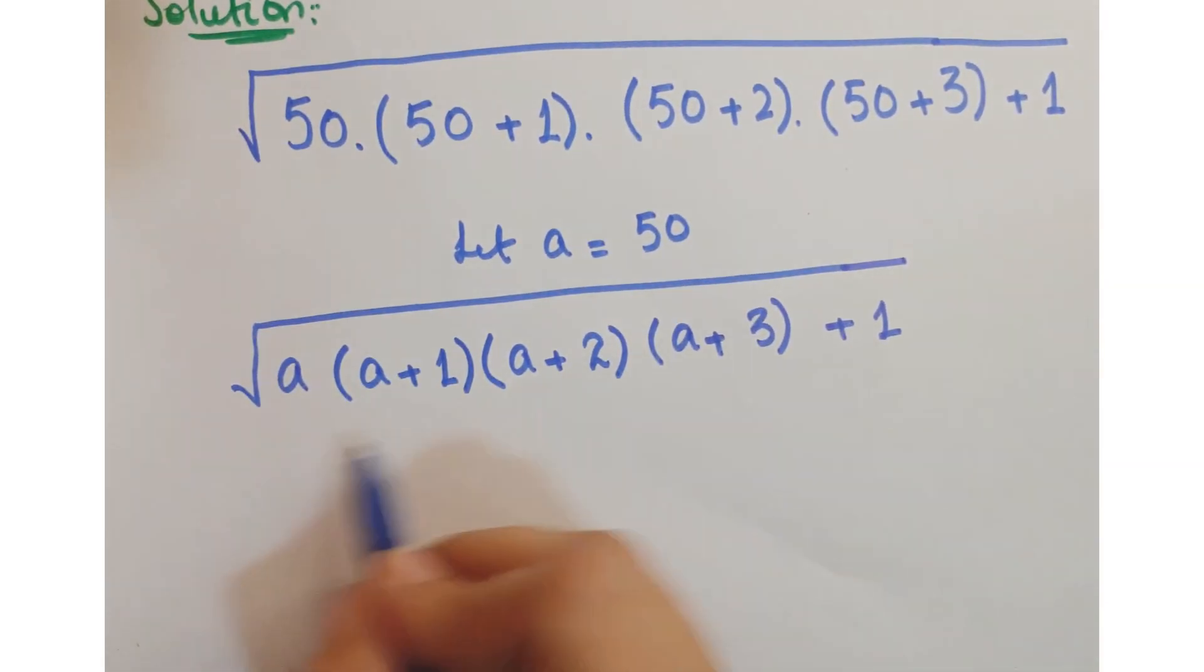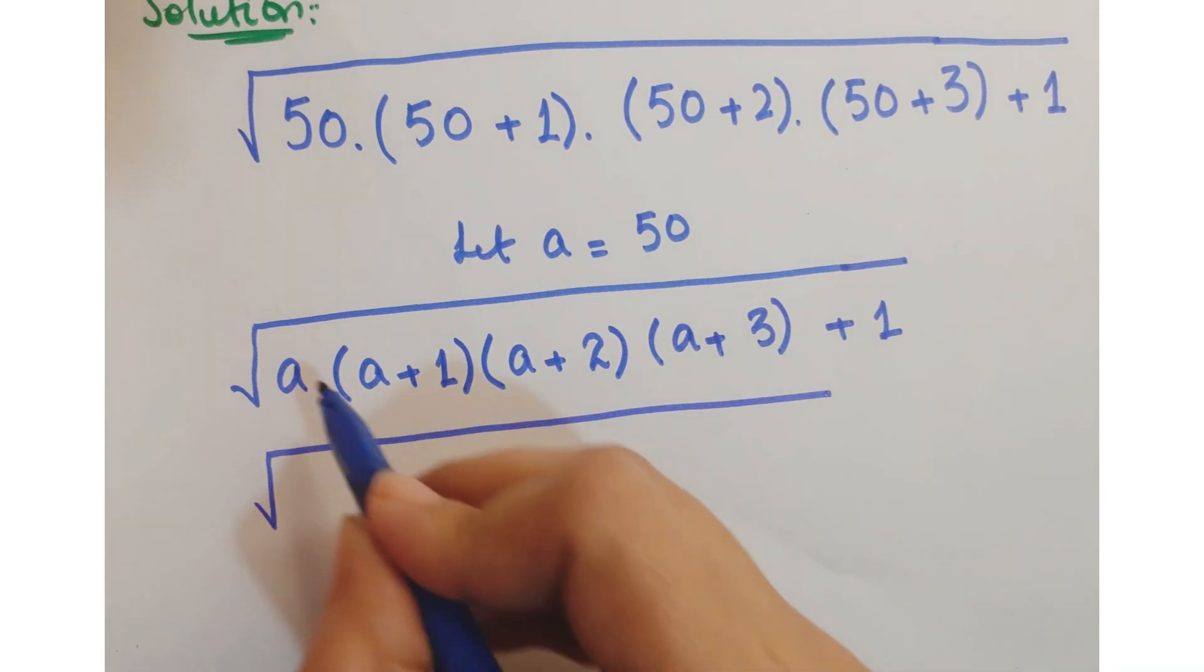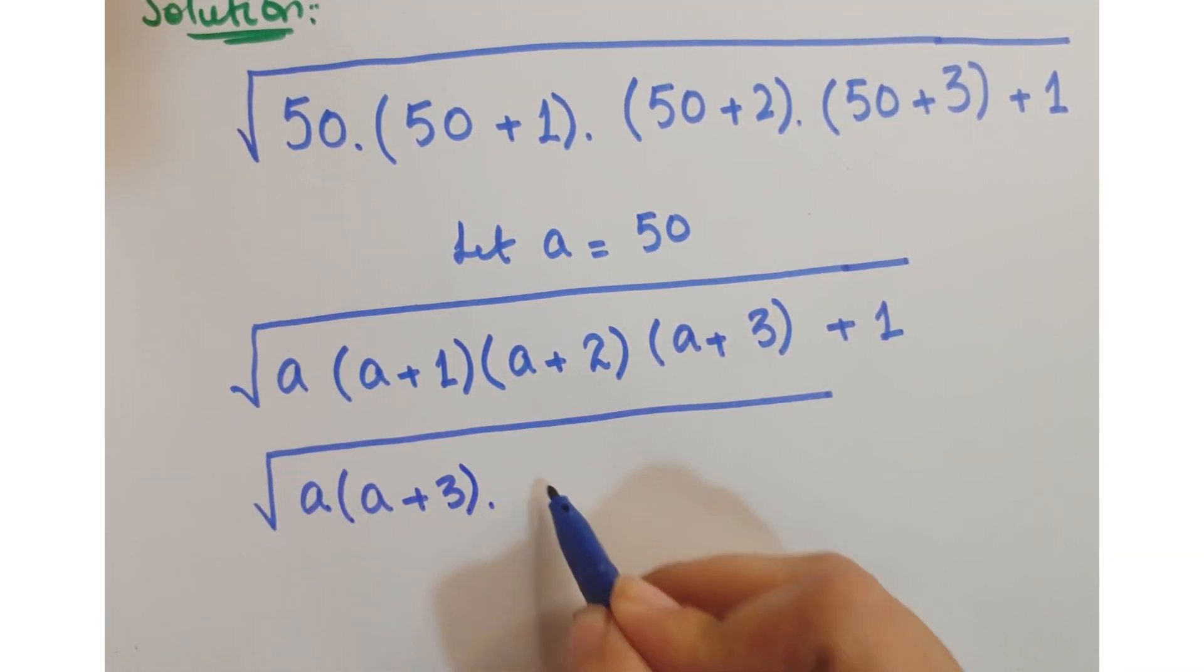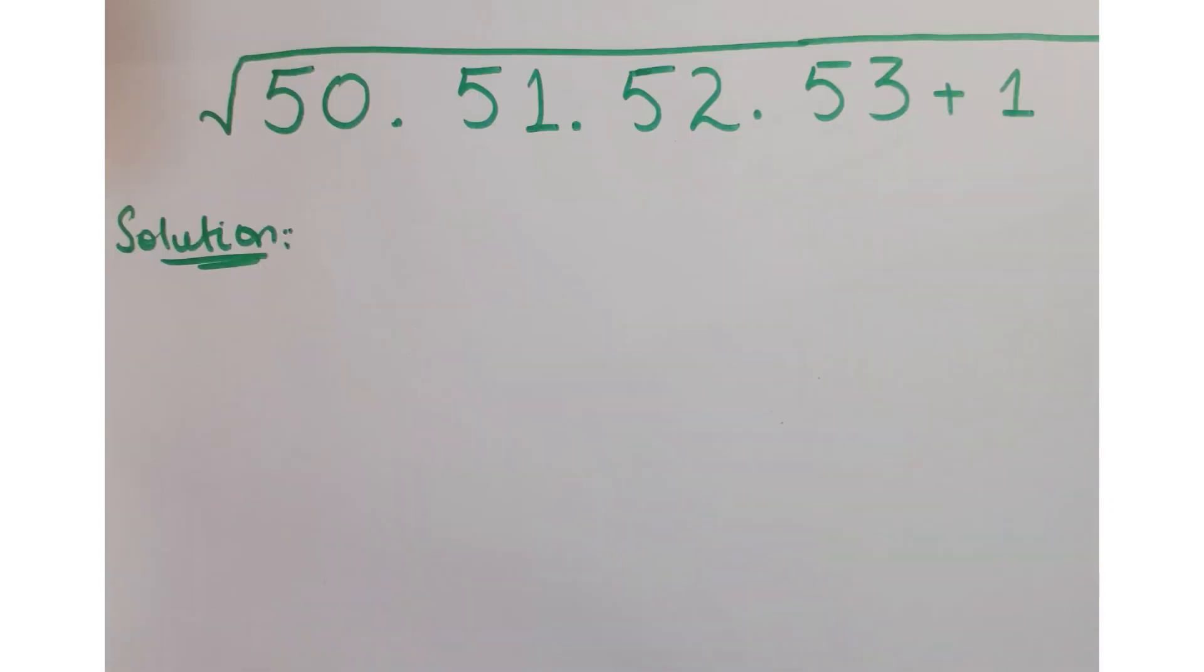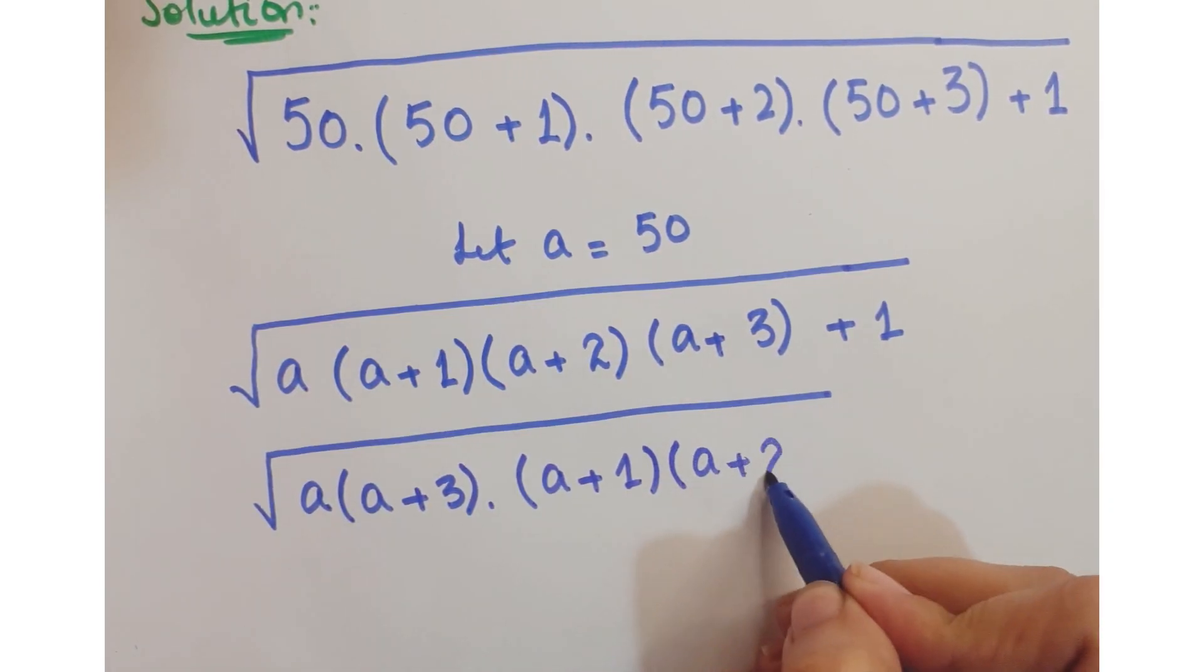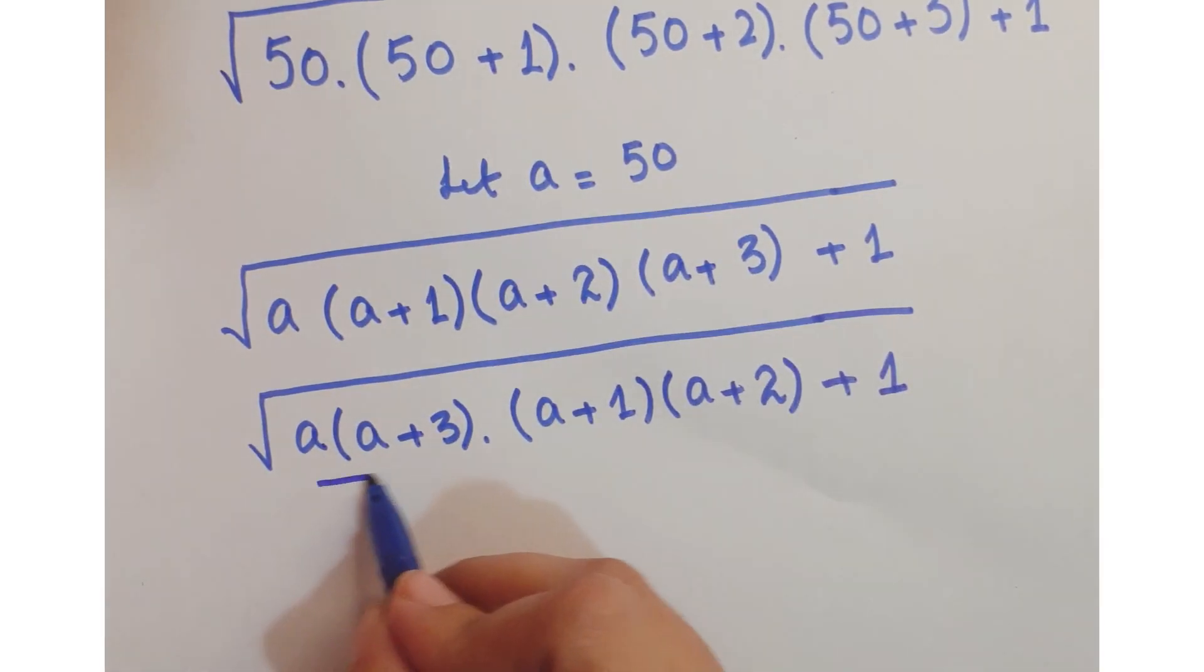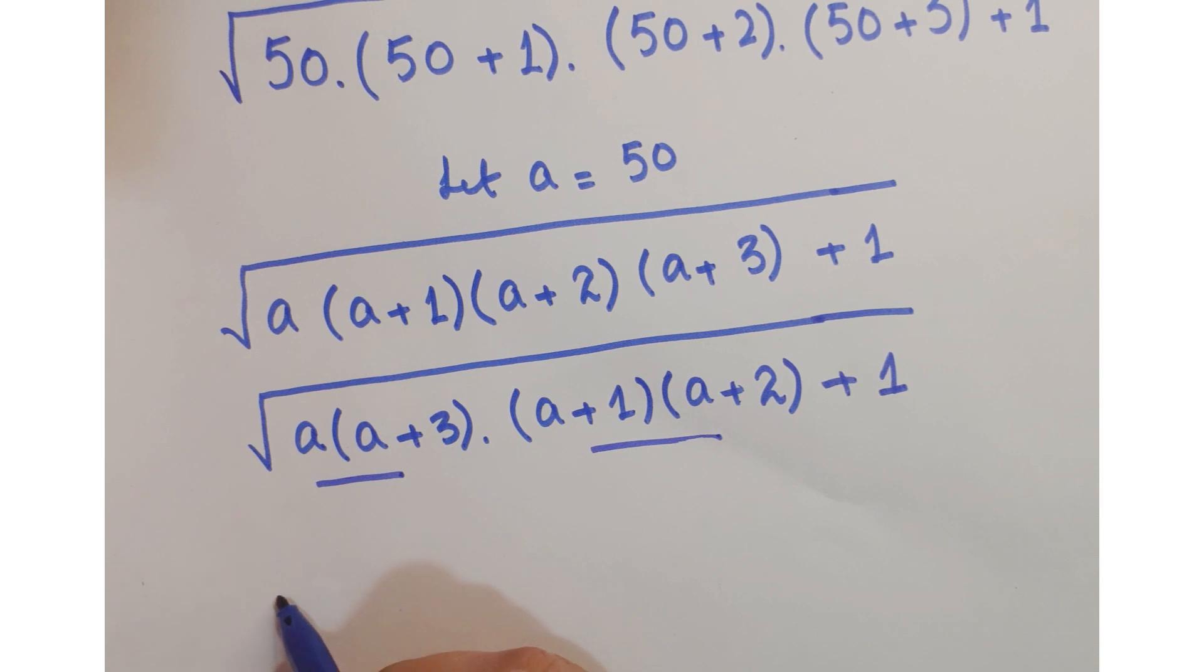Now we can rearrange these terms that are getting multiplied. We can write a into (a+3) into (a+1) into (a+2) plus 1.